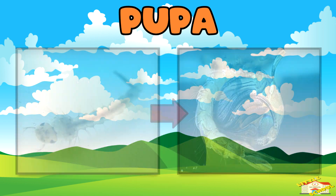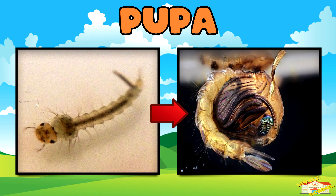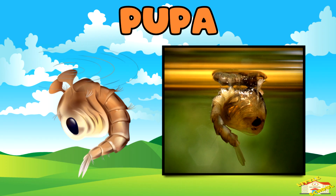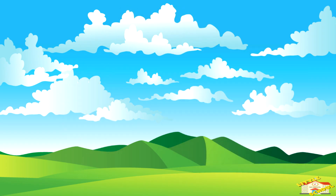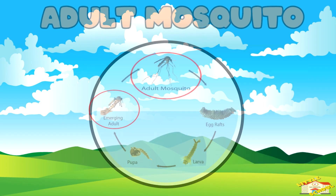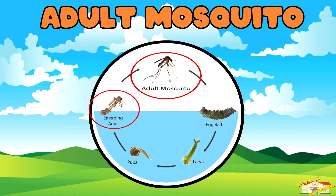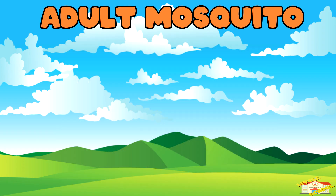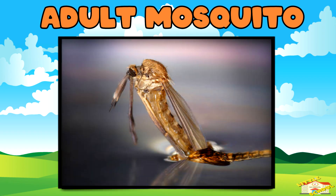Pupa. After a few days, the larva turns into a pupa. Pupa still move around by flipping and tumbling in the water. Adult mosquitoes. After a few days, an adult mosquito comes out of the pupa and flies away to find food and start the cycle again.